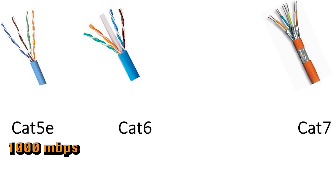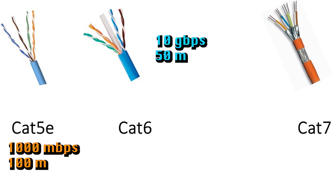Something to know about cables: the longer the cable, the more signal drop-off there is. Cat5e can carry a signal at that rate for about 100 meters. Cat6 can carry a signal at 10 gigabits per second — that's 10,000 megabits — for about 50 meters, after which it drops off to 1000 megabits a second. Cat7 cable is capable of 100 gigabits a second at very short distances of up to 15 meters, and drops off to 10 gigabits per second after that.